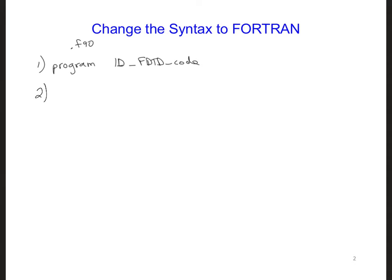Next, add 'implicit none' on the next line right after the program name. By including this, we're ensuring that the code does not create any new variables if we misspell the name of a variable, for example. In other words, when we include this line, we have to specifically declare every variable and array that we want to use in the code.